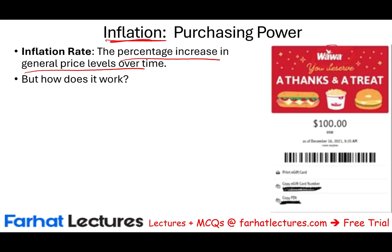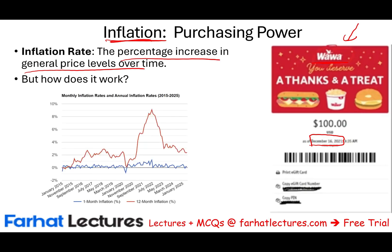One of my viewers, Elijah, passed the CPA exam and gifted me a $100 gift card from my favorite place, Wawa — a convenience store on the East Coast. He gave it to me on December 16, 2021. Usually my wife and I take a trip to Florida in December or January. He gifted it to me when inflation in the U.S. was rising, but I forgot to use it. Another year went by — December 2022 — when inflation was almost peaking, and I still forgot to use it.